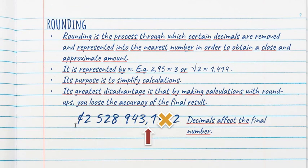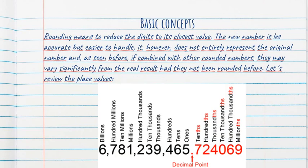Let's take a look into this example. I put here 6,781,239,465.1492. The decimals affect the final number. Now, if I scratch the last three, then it just becomes with one decimal.